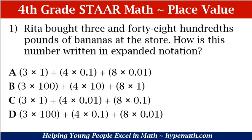Question number one says: A bar read 3 and 48 hundredths pounds of bananas at the store. How is this number written in expanded notation? Answer A is 3 times 1 plus 4 times 1 tenth plus 8 times 1 hundredth. B: 3 times 100 plus 4 times 10 plus 8 times 1. C: 3 times 1 plus 4 times 1 hundredth — remember with that decimal I'm saying hundredth with the 'th' at the end — plus 8 times 1 tenth, again with the 'th' at the end. D: 3 times 100 plus 4 times 1 tenth plus 8 times 1 hundredth.